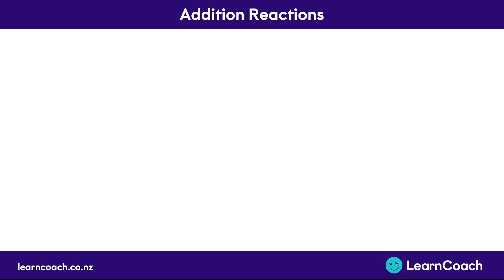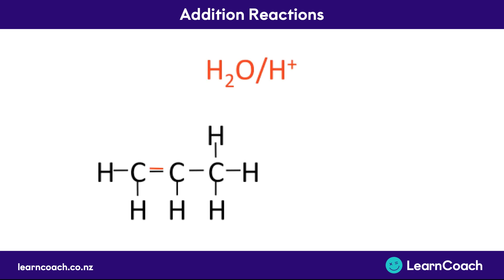Welcome to this video on addition reactions. Today we're going to look at three types. The first rule we'll look at is what an addition reaction actually is. This happens with alkenes — molecules that have a double bond. When we introduce another molecule, for example water, next to this double bond, the double bond can actually break open, making a single bond and two spare bonds, and this extra molecule gets added on to those two open bonds.